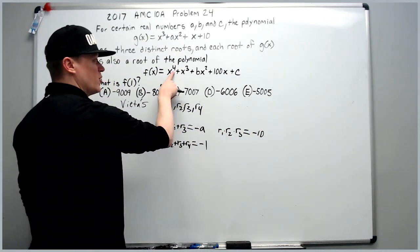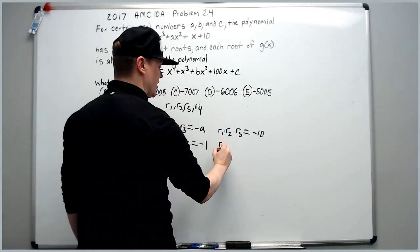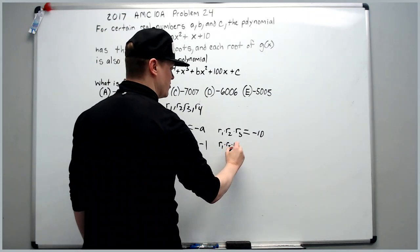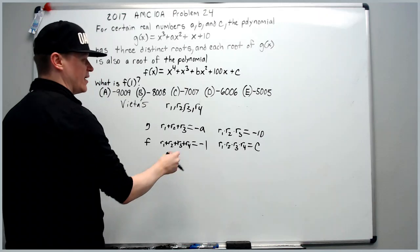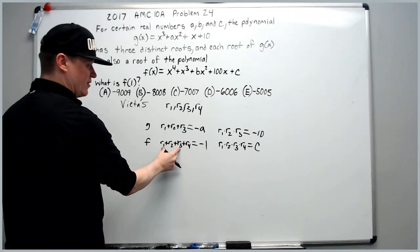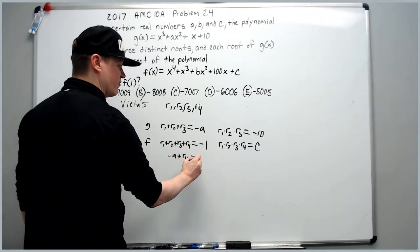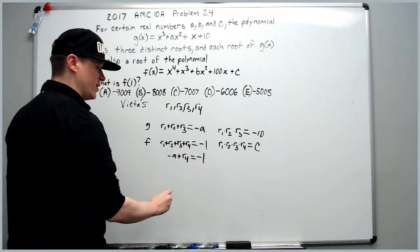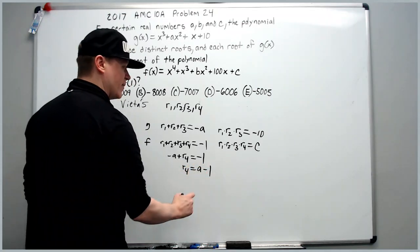When you get to quartic though, it goes back to being positive constant over leading coefficient. r1 times r2 times r3 times r4 will equal c. I can now plug the negative a into the second equation to get negative a plus r4 equals negative 1. So, this can be solved for r4 equals a minus 1.